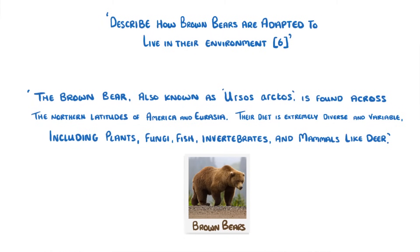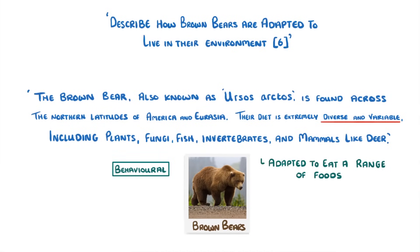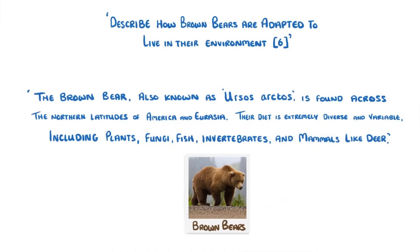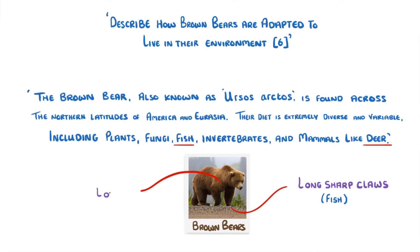Next, we can move on to its diet, which it says is extremely diverse and variable. So we could say that the bear has become adapted to eat a range of different food types, and this would actually be a good example of a behavioural adaptation — because the fact that the bear would choose to eat a variety of different things is a way that its behaviour has adapted to help it survive. We could also look at individual foods like fish or deer and think of how the bear is adapted to catch each of them: long, sharp claws for catching fish, and lots of muscle so they can bring down strong prey like deer. Both of these would be examples of structural adaptations.